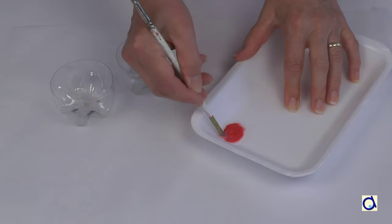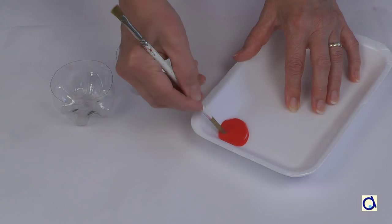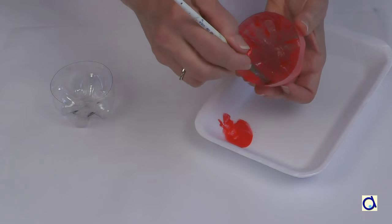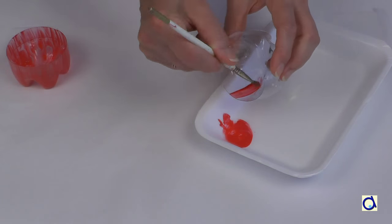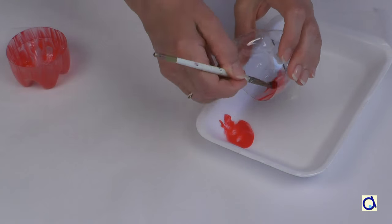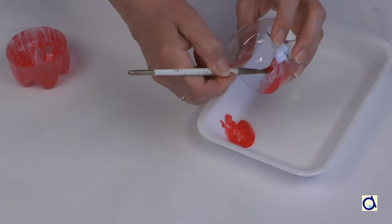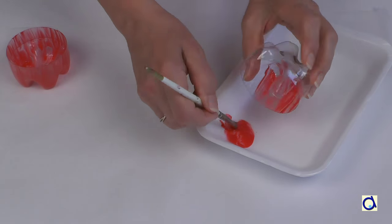If you want your apple to be slightly transparent, paint the inside of the bottles with a mix of acrylic varnish and a few drops of red paint. If you want a good solid colour, paint the inside directly with red acrylic paint. Let dry completely.